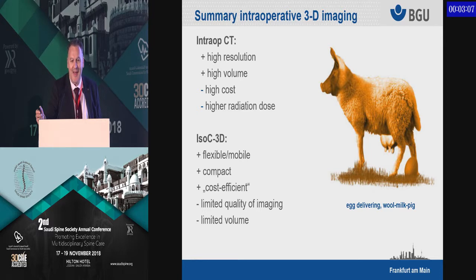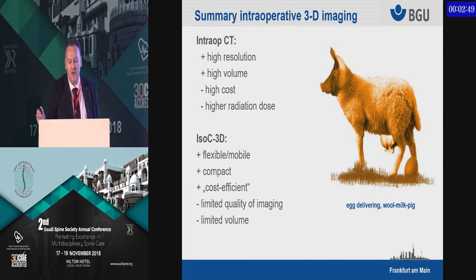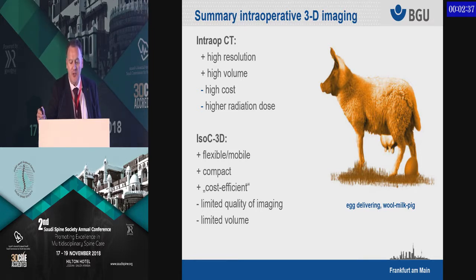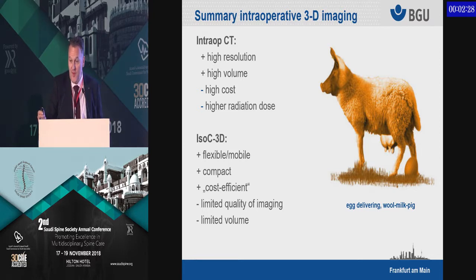What we call in Germany an 'eierlegende Wollmilchsau' — the egg-laying wool-milk pig — does not exist. In other words, you have to make compromises. If you want an intraoperative CT scanner, you get high resolution and high volume, but you have high costs and high radiation doses. On the other hand, if you use the ISO 3D scanner, you are flexible, mobile, compact, and cost-efficient, but with limited imaging quality and limited volume.